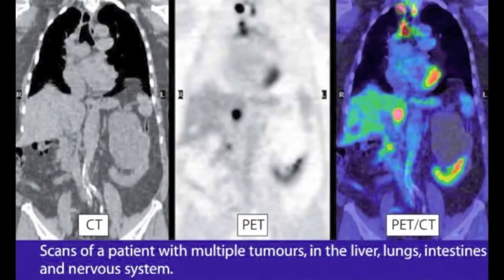Often the PET scan is combined with a CT image to give a combined PET-CT image. The hot spots detected by the PET are overlaid onto the slices of the CT x-ray image to locate the areas of high metabolism precisely.